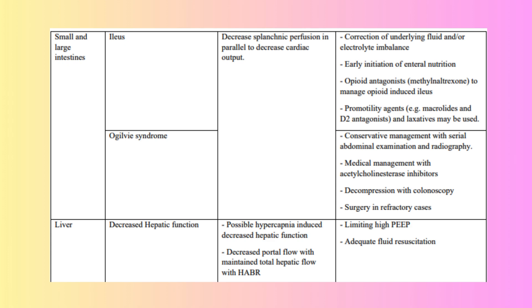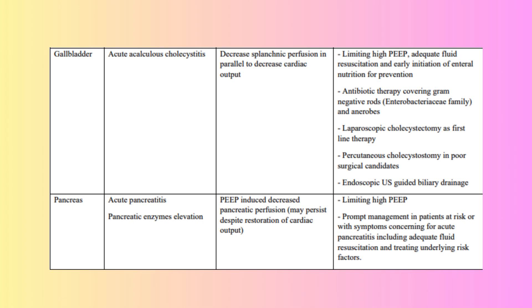GI Bleeding: stress-related mucosal damage leading to bleeding in ICU patients, typically managed with prophylactic PPIs or H2 blockers. Gallbladder complications include acute acalculous cholecystitis.